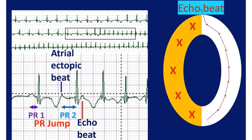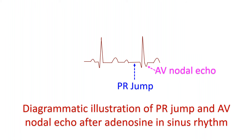Corresponding to the PR jump, during electrophysiology study, an AH jump can be demonstrated after an appropriately timed atrial extra stimulus. PR jump can also be induced by adenosine during sinus rhythm. In this case, PR jump is defined as a sudden increase in PR interval by 50 milliseconds or more between two consecutive sinus beats.